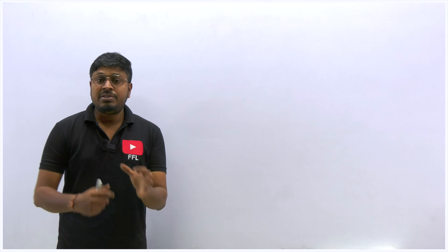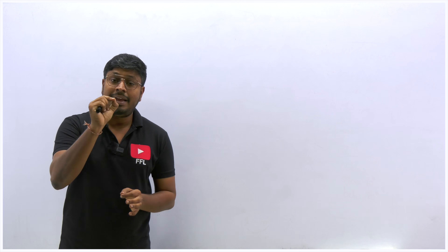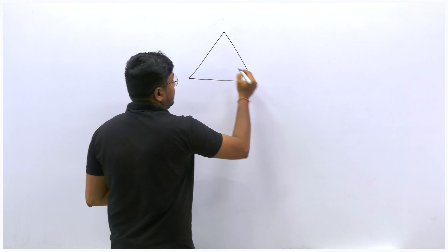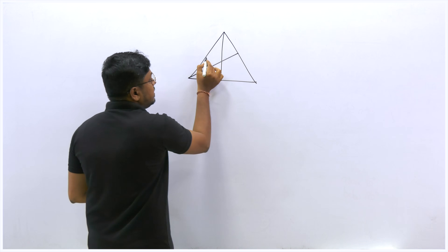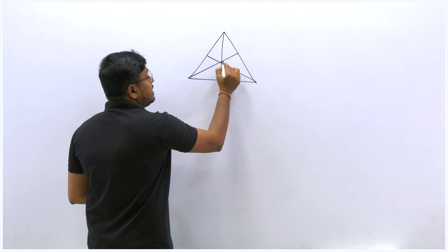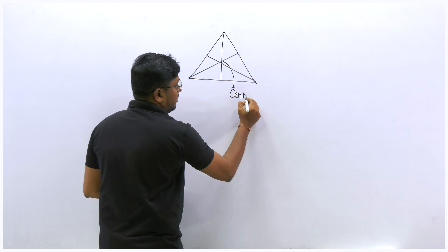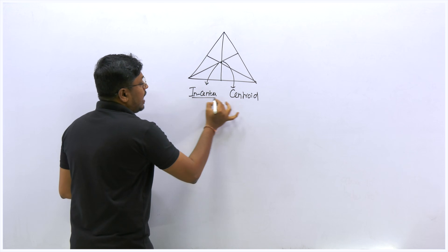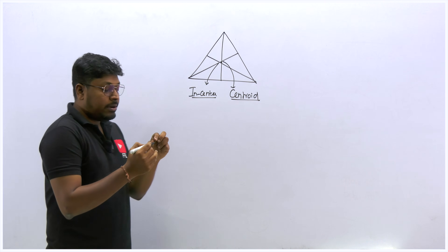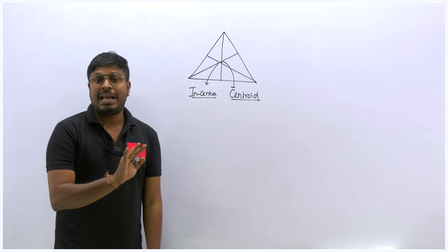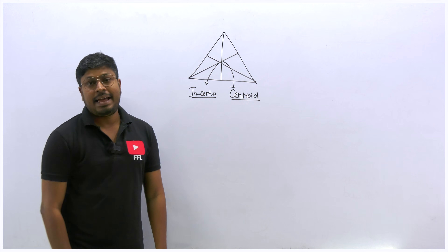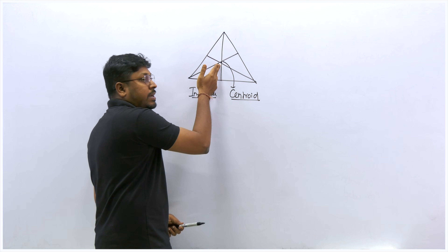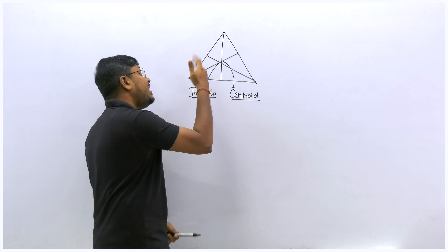In this lesson number eight, many students have a common doubt. When we draw three lines — for example three medians — and there is a meeting point, in some questions I have called this point the centroid and in other questions I have called it the incenter. Many students are confused about whether centroid and incenter have the same meaning. They do not. A concurrent point of a triangle is the connecting point where different lines meet, and that connecting point can be defined in various ways.